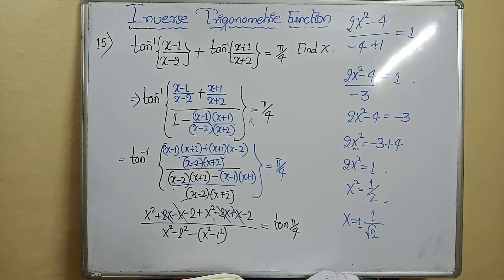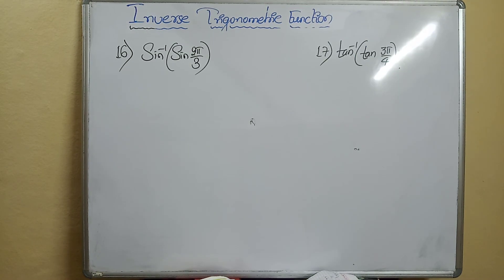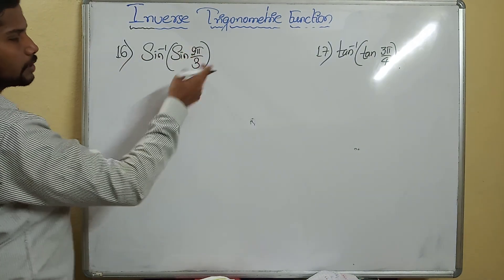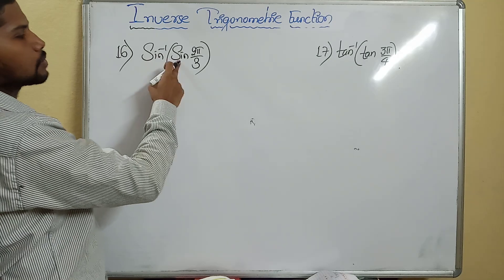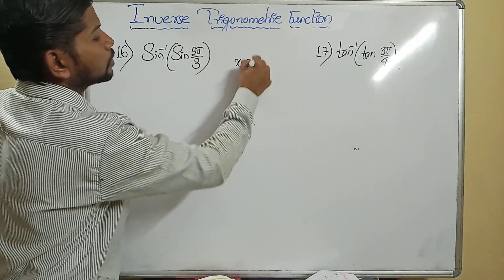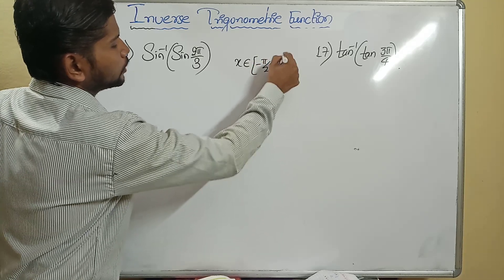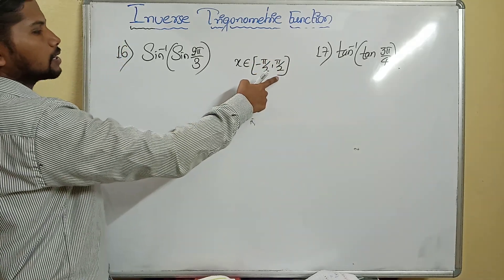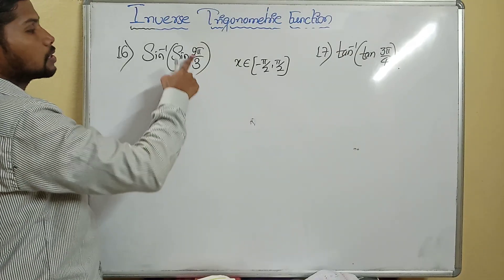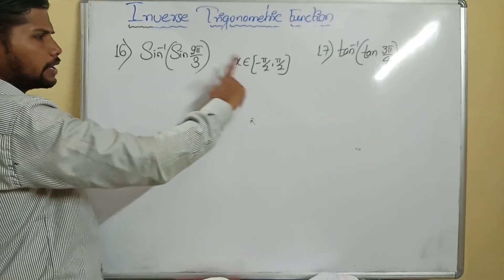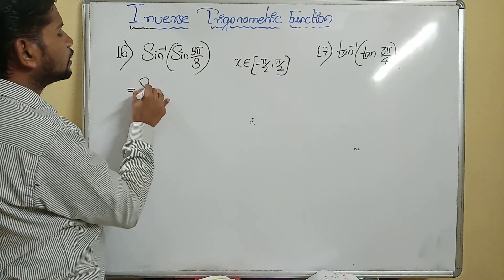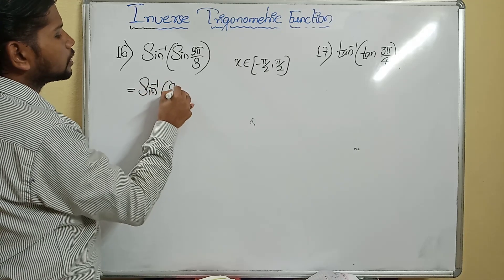Next: sine inverse of sin(2π/3). Generally sine inverse of sin θ equals θ only when θ belongs to [−π/2, +π/2], i.e., between −90 and +90. But 2π/3 is 120 degrees, which is not in that range. So I need to alter the given angle.